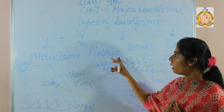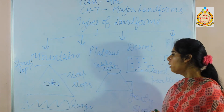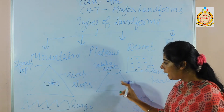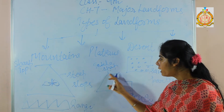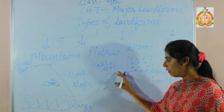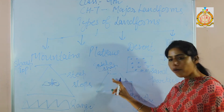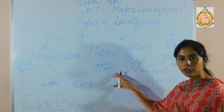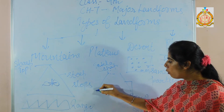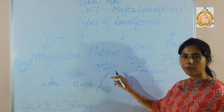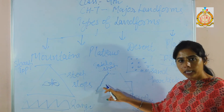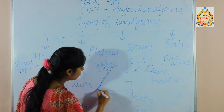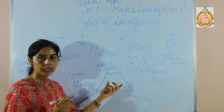The next landform type is a plateau. A plateau is a table-shaped land. From the base it looks like a mountain, but at the top it is flat — a table-shaped flat. A plateau is a raised area on the ground surface with a flat, table-shaped top, and its slopes are gentle, not sharp or deep.